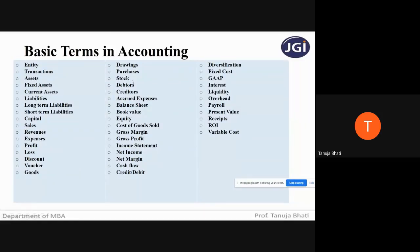Stock is nothing but the unsold goods lying in the business by the end of a period. Next, who is a debtor? A debtor is a person or individual who owes money to the entity. Next, a creditor is a person to whom the entity owes money.